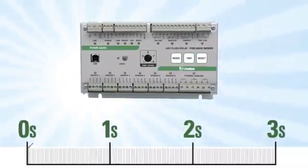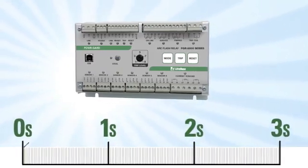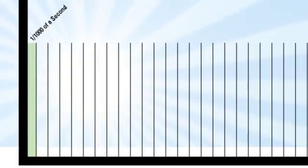The LittleFuse arc flash relay detects and trips a fault extremely fast, in just one one-thousandth of a second, before significant damage occurs.